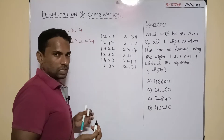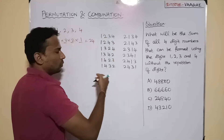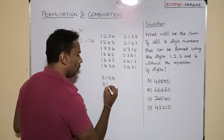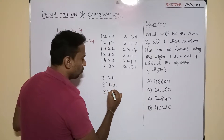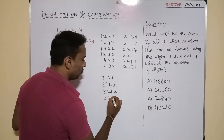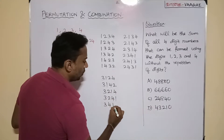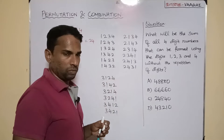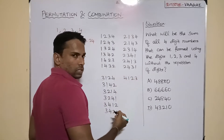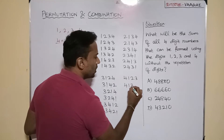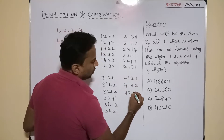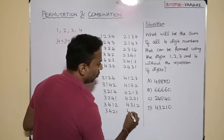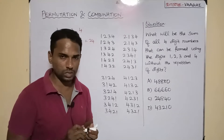The next six numbers start with 3. Starting with 3 in thousands place: 3124, 3142, 3214, 3241, 3412, 3421. Starting with 1 and 2 is over, now starting with 4: 4123, 4132, 4213, 4231, 4312, 4321. That's it — we have written all 24 numbers.